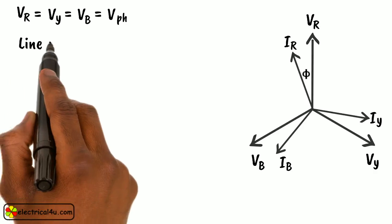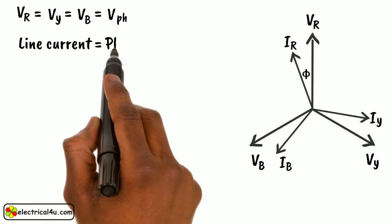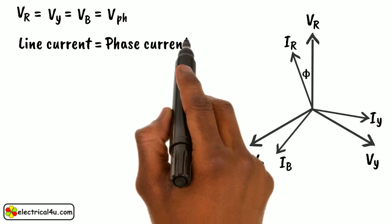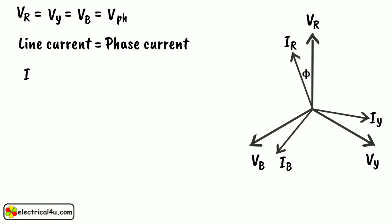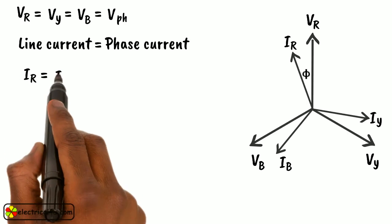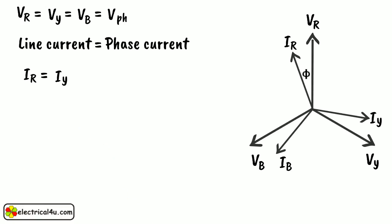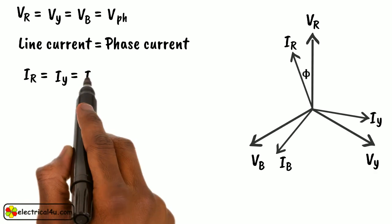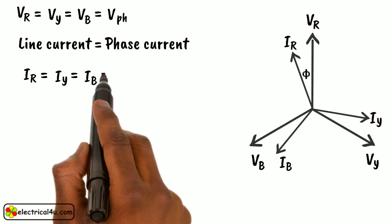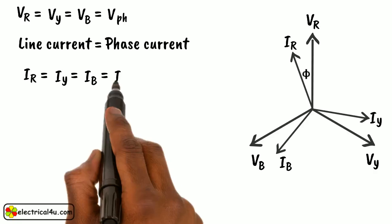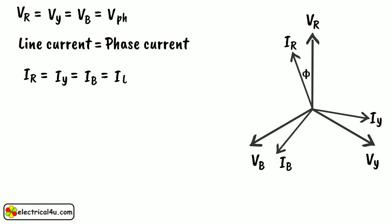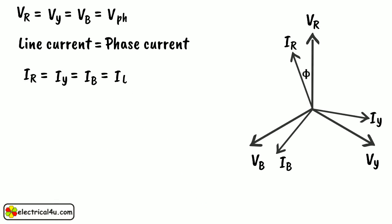We know in star connection, line current is same as phase current. The magnitude of this current is same in all three phases, and say it is IL. That means line current of R phase IR equals line current of Y phase IY equals line current of B phase IB equals IL.